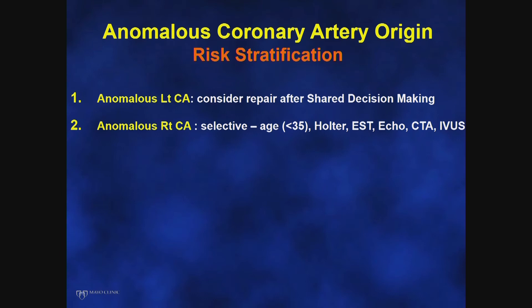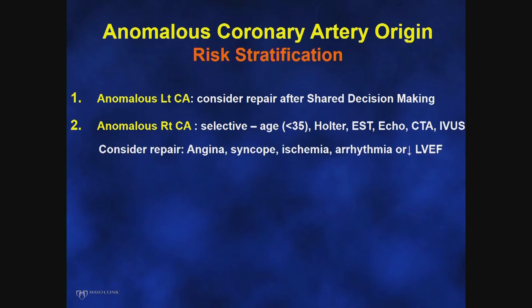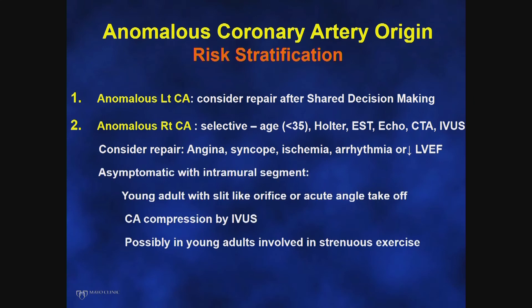Echocardiography is useful in identifying coronary artery anomalies — especially in young children — and also helps assess ventricular function, mitral regurgitation, and is good for diagnosing ALCAPA. CT scan, coronary angiography, and intravascular ultrasound provide additional information. Repair is generally considered when a patient has symptoms of angina, syncope, ventricular arrhythmia, or ischemic left ventricular dysfunction. In an asymptomatic patient with incidental anomalous right coronary artery from the left, focus on anatomy: Is there an intramural segment? How long is it? Is there a slit-like opening and acute angle of takeoff? Can significant coronary compression be demonstrated by IVUS at rest or with provocation using exercise, saline, atropine, and dobutamine?